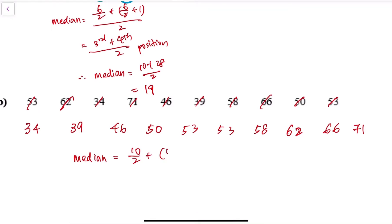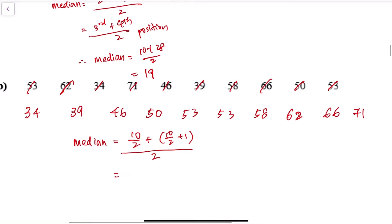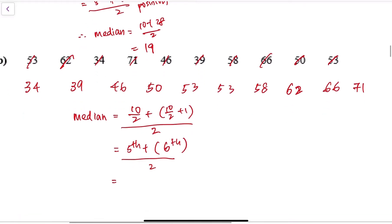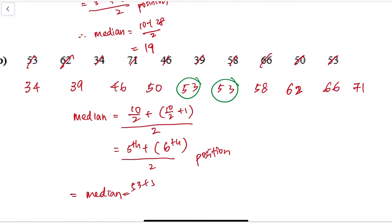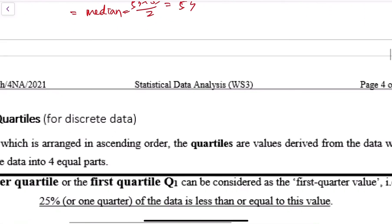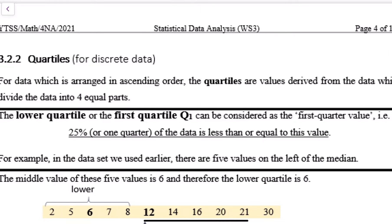For ten numbers, the median is the tenth number plus one divided by two — in this case it is the fifth number plus the sixth number divided by two. Counting: one, two, three, four, five — the fifth number — and the sixth number. So that's 53 plus 53 divided by two, therefore the median is 53. Such a situation can happen when your median falls on two identical numbers, and when you divide you still get a nice whole number.